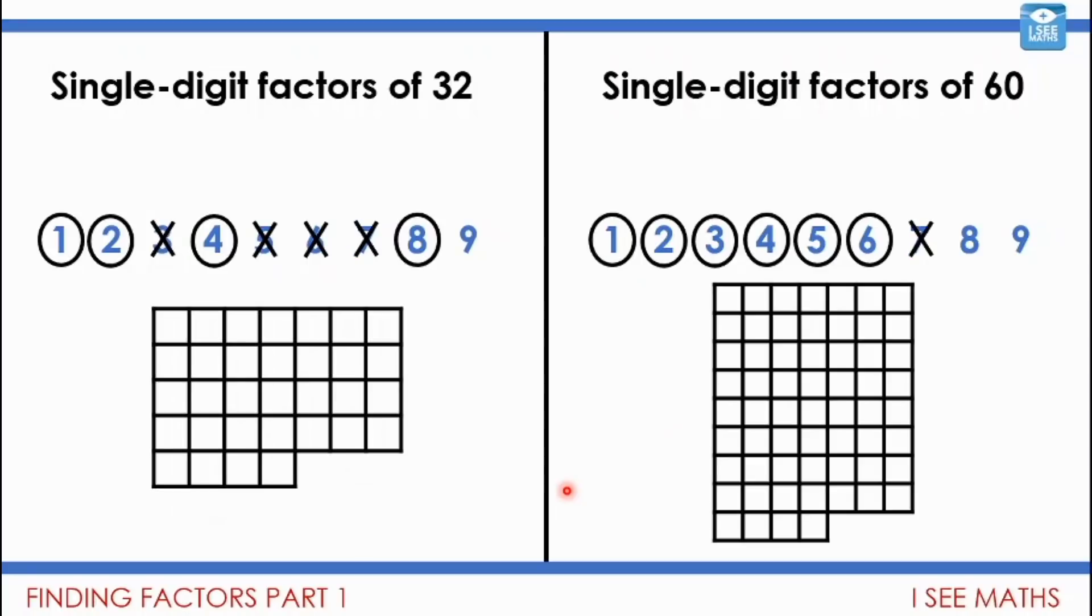7. So 7 isn't for either. 7, 14, 21, 28. And then 4 more to get to 32. That's not a whole other 7. And just the same here. If I count up in lots of 7s, I wouldn't get to 60. 60 divided by 7 doesn't give me a whole number.